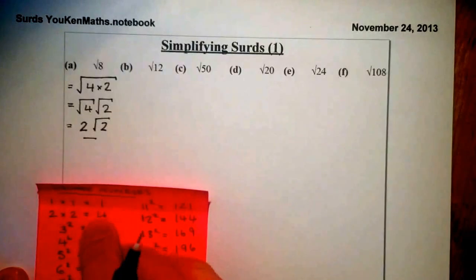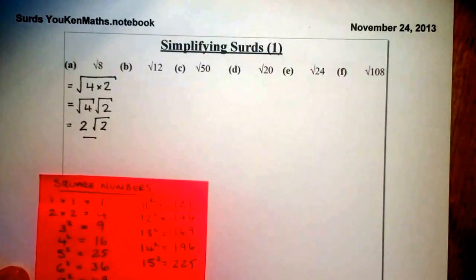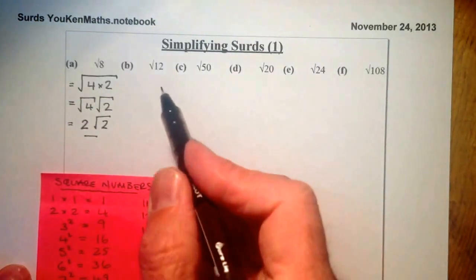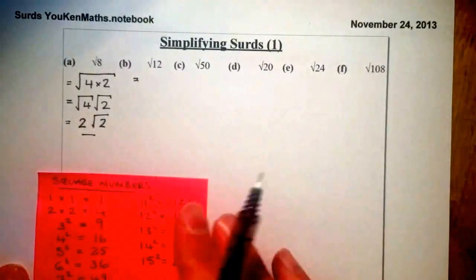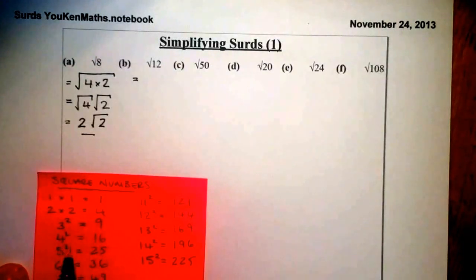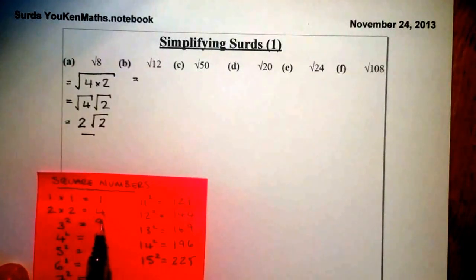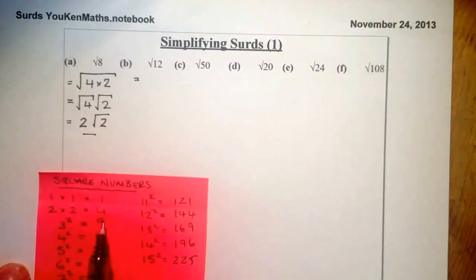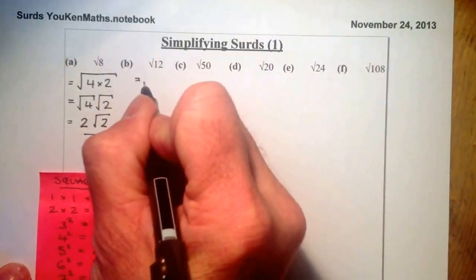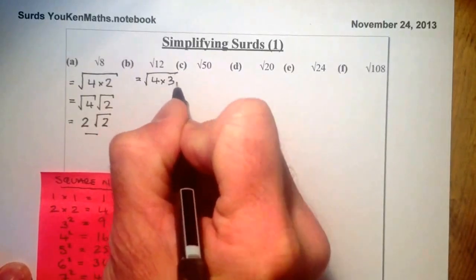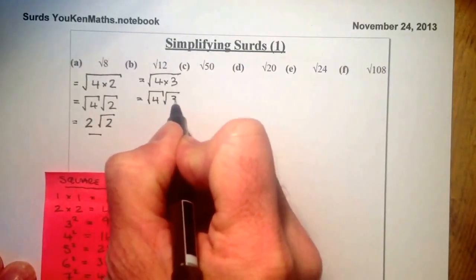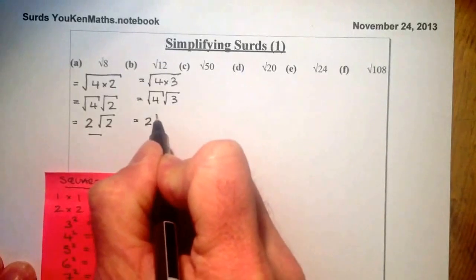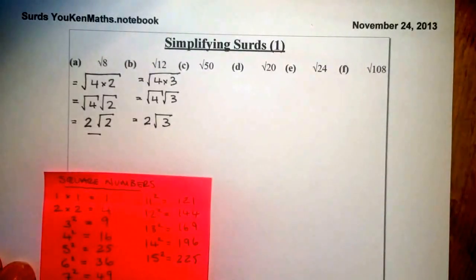Let's look at root 12 — this is non-calculator work. Same approach: I'm looking for two numbers that multiply to give 12, one of them being a square number. 2 times 6 gives 12, but neither is a square number. I'll use 4: 4 times 3. Splitting that gives root 4 times root 3, which gives 2 root 3. I can't simplify root 3 any further, so that's the answer.